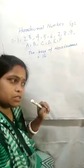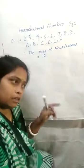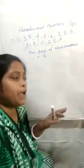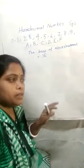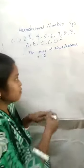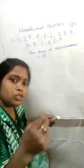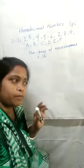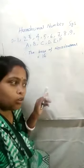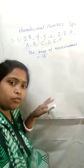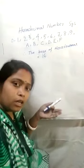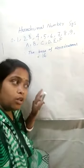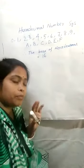The decimal number system contains the base of 10. Binary — 'bi' means 2, so the binary number system has base 2. Octal comes from octagon, which means 8-sided, so octal contains base 8. Hexadecimal is decimal plus hex — hexagon means 6, and decimal means 10, so 10 plus 6 equals 16.